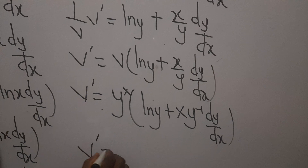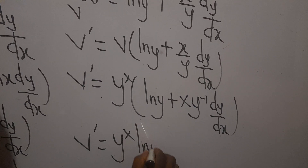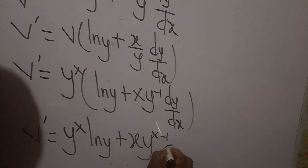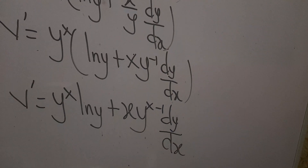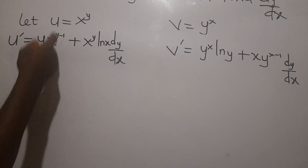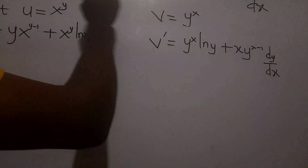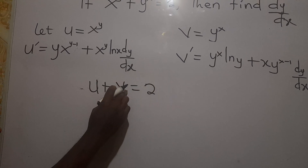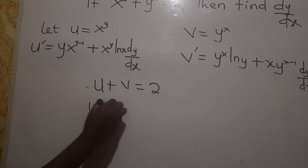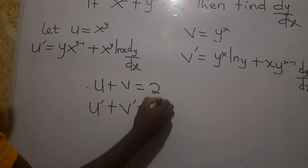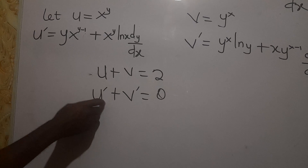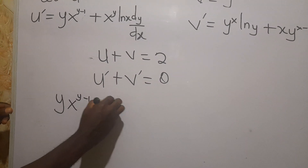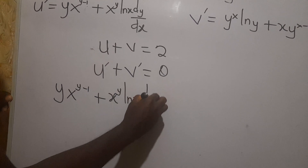Expanding the bracket, v prime equals y exponent x times ln y plus x times y exponent (x minus 1) times dy/dx. Since u plus v equals 2, differentiating gives u prime plus v prime equals 0. Substituting u prime, we have: y times x exponent (y minus 1) plus x exponent y times ln x times dy/dx, plus v prime equals 0.